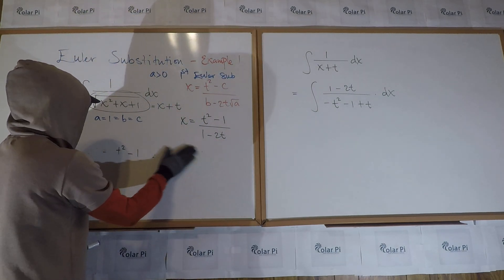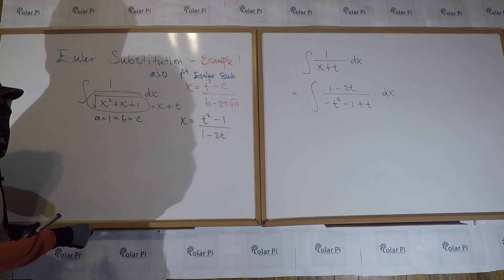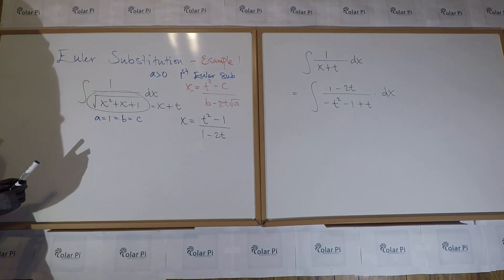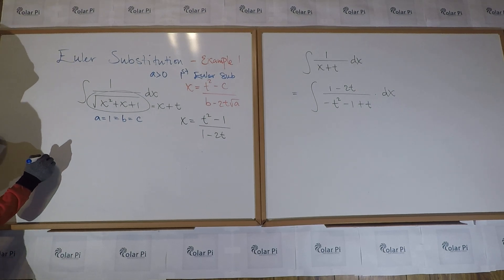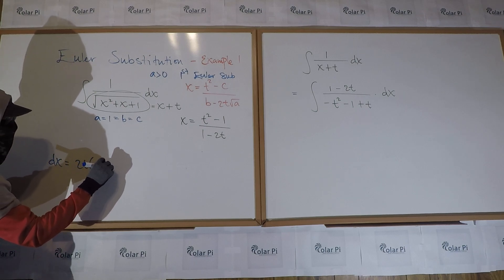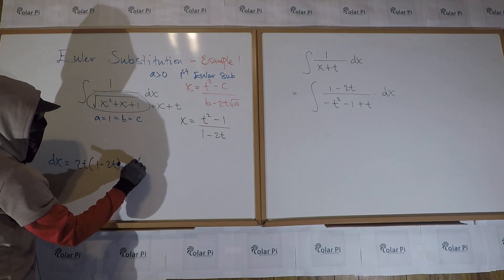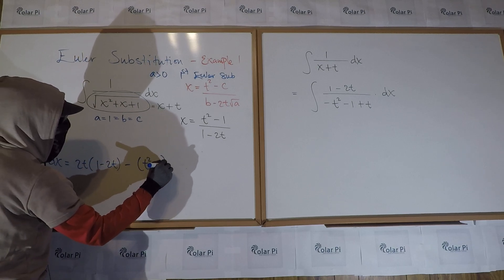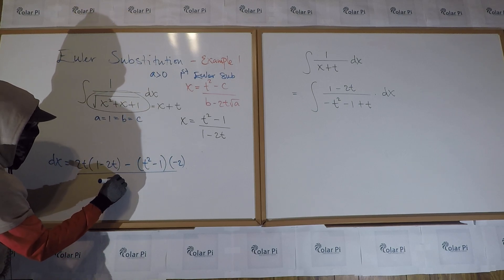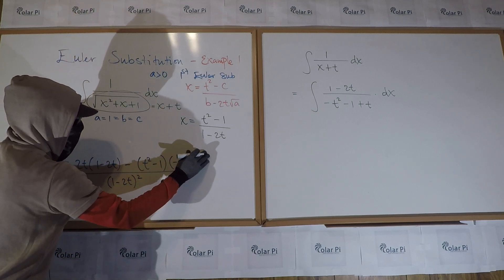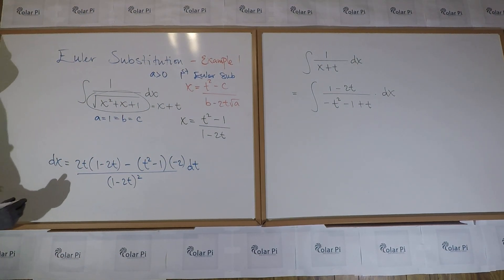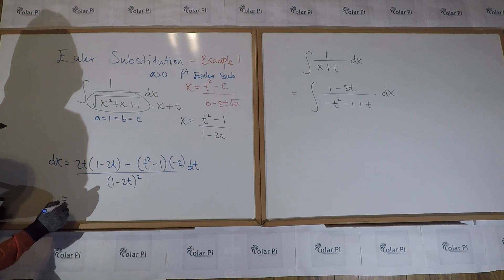So our integral is taking shape. Right now, it looks like we have the integral of one divided by X plus T is one divided by this quotient, which is just a reciprocal of that quotient. So it is one minus two T divided by minus T squared minus one plus T. This is looking good. The only thing that has an X is DX. So as soon as we figure out what DX is in terms of T, we're good to go. I don't need this anymore. And beginning with this X here, DX is just a matter of the quotient rule.